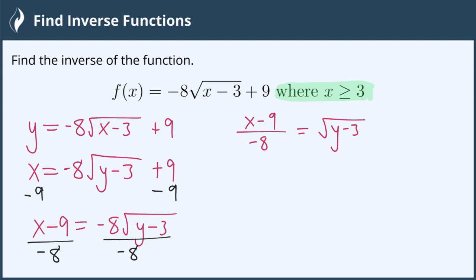because I need to get rid of the square root next, I'm going to square both sides. Make sure you put both sides in parentheses before you square it to show that you're doing the entire side. Now on the left, that's going to give me (x-9)² on the top.